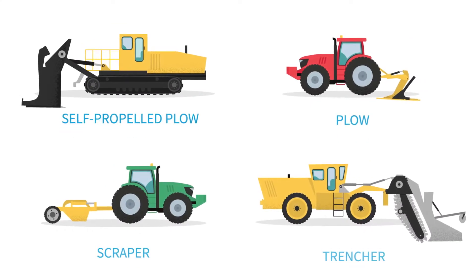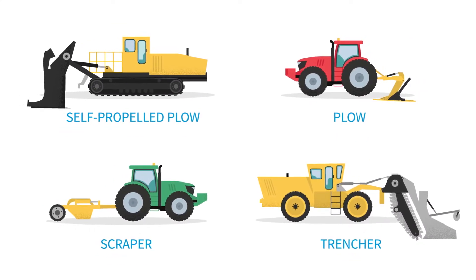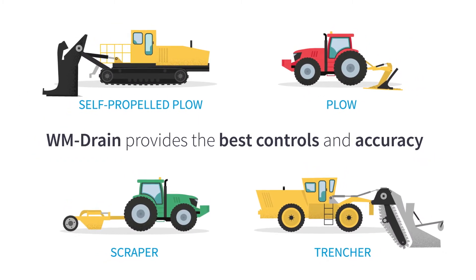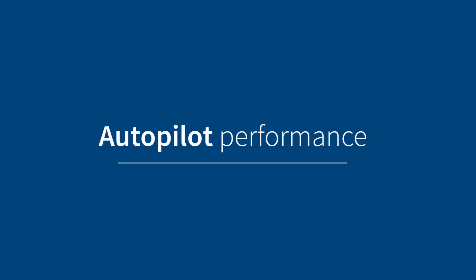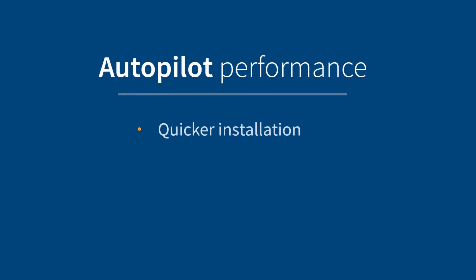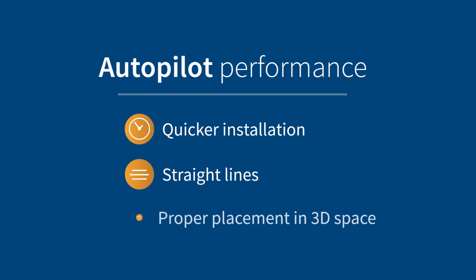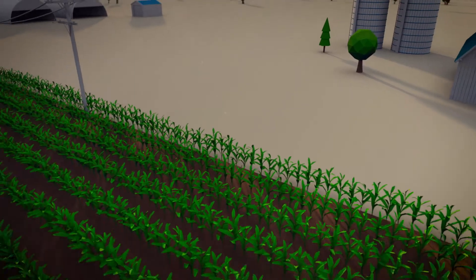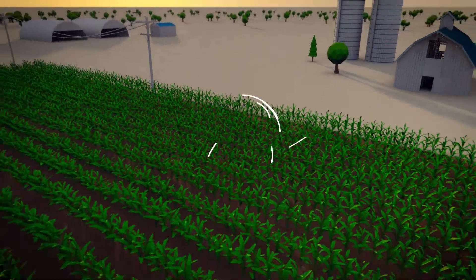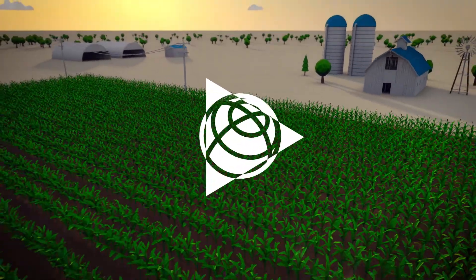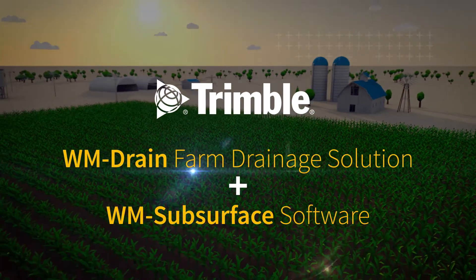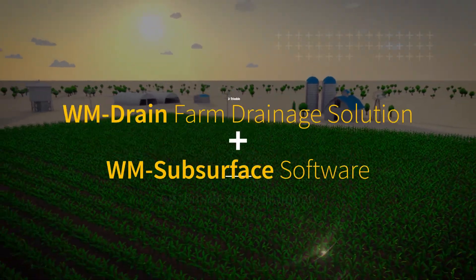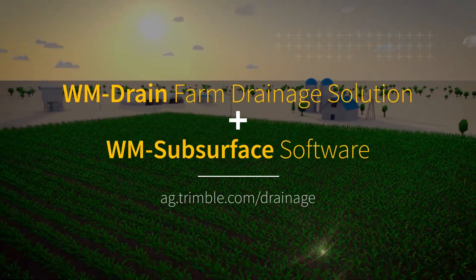Regardless of the equipment you use, WM Drain provides the best controls and accuracy in the business. Autopilot performance will guarantee quicker installation, straight lines, and proper placement in 3D space. Learn more about how our solutions can help control your field's water table and significantly improve your crop yield. Visit our website or contact your local Trimble dealer today.